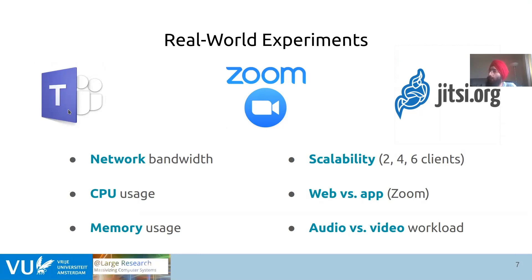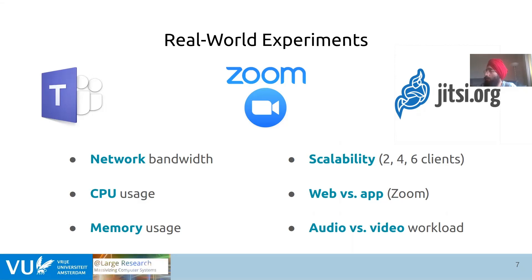We chose Teams, Zoom, and Jitsi as the three video conferencing systems — Teams and Zoom because they are popular in both industry and academia, and Jitsi because it is an open-source variant. The metrics considered were network bandwidth, CPU usage, and memory usage, as these were feasible to collect from the client side. Metrics such as jitter, which we had initially considered, had to be dropped because they require access to the server side, which is not possible due to the black-box nature of these applications.